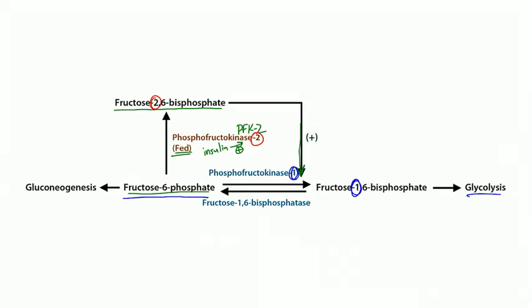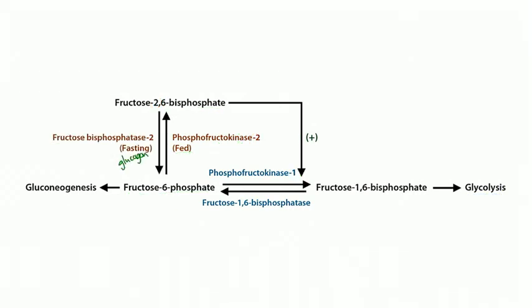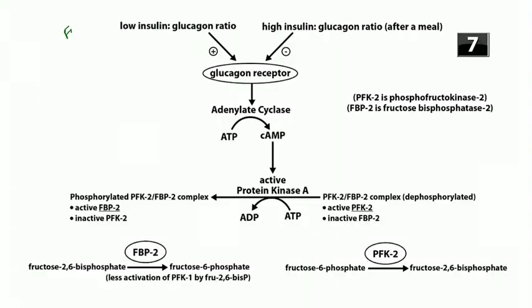In the fasting state, instead of insulin you release glucagon. Glucagon has actions that oppose insulin - instead of stimulating PFK2, glucagon stimulates fructose bisphosphatase-2 (FBPase2), which converts fructose-2,6-bisphosphate back into fructose-6-phosphate for use in gluconeogenesis. When fasting and glucose levels are low, you don't want to break down glucose through glycolysis - you want the liver to make glucose through gluconeogenesis. So glucagon shifts everything toward gluconeogenesis to raise blood glucose.